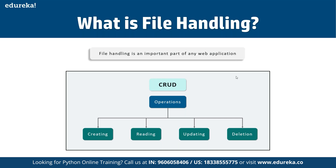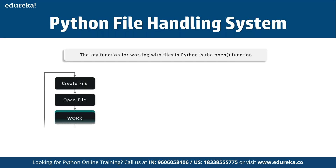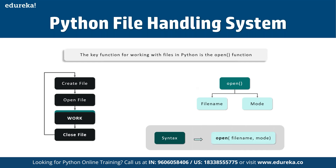In Python, the key function for working with files is the open() function. Using open(), we can define what kind of file we want to work with. We first create the file locally, then open it to read or modify it. The open() function returns an instance of the file and takes two primary arguments: the file name and the mode. We can also specify if the file should be handled as binary (B) or text (T) mode.